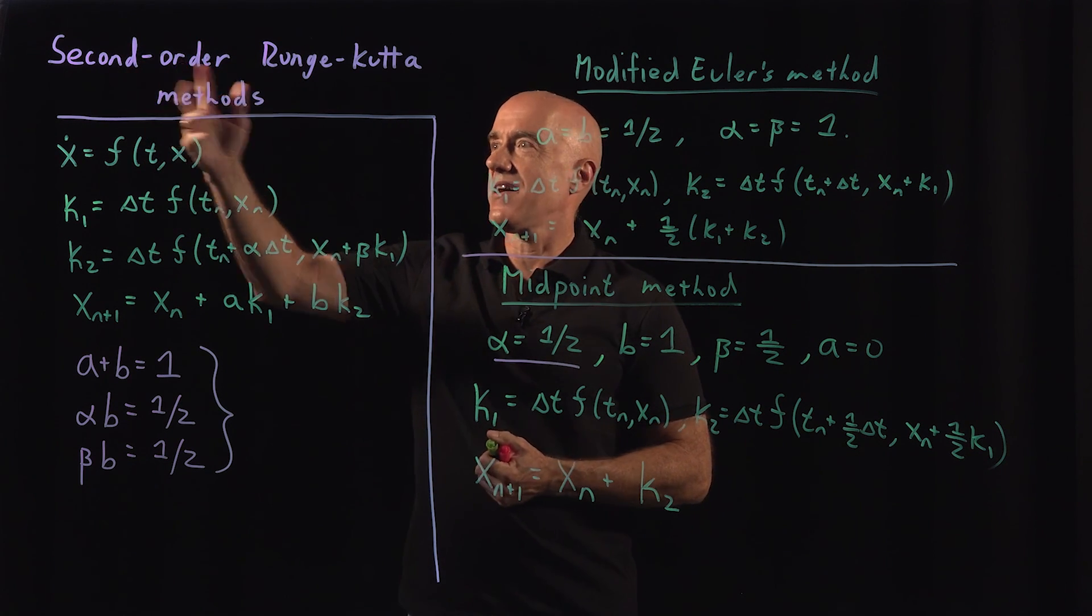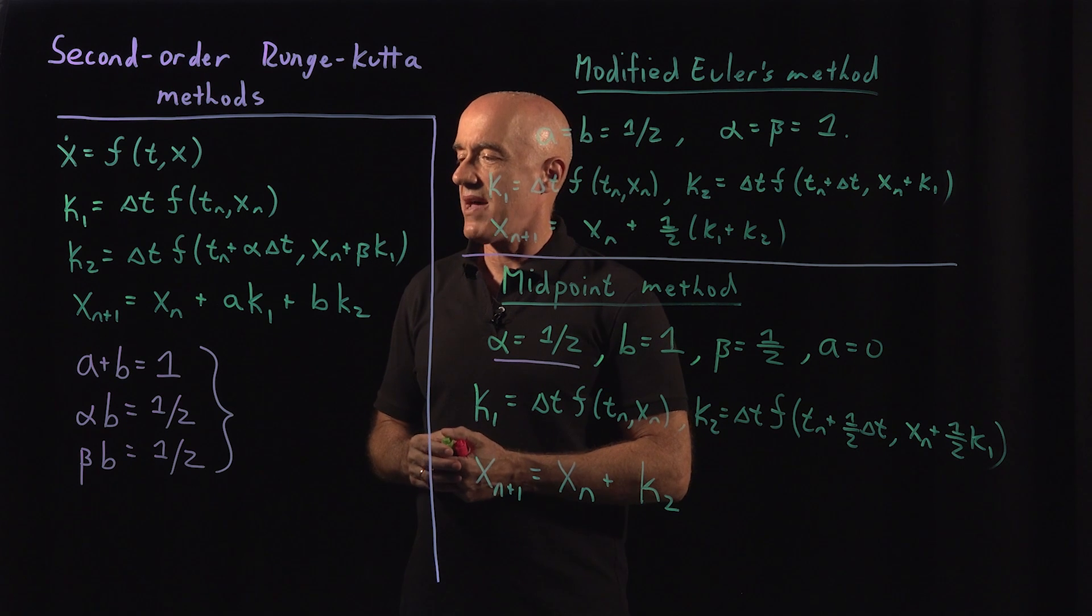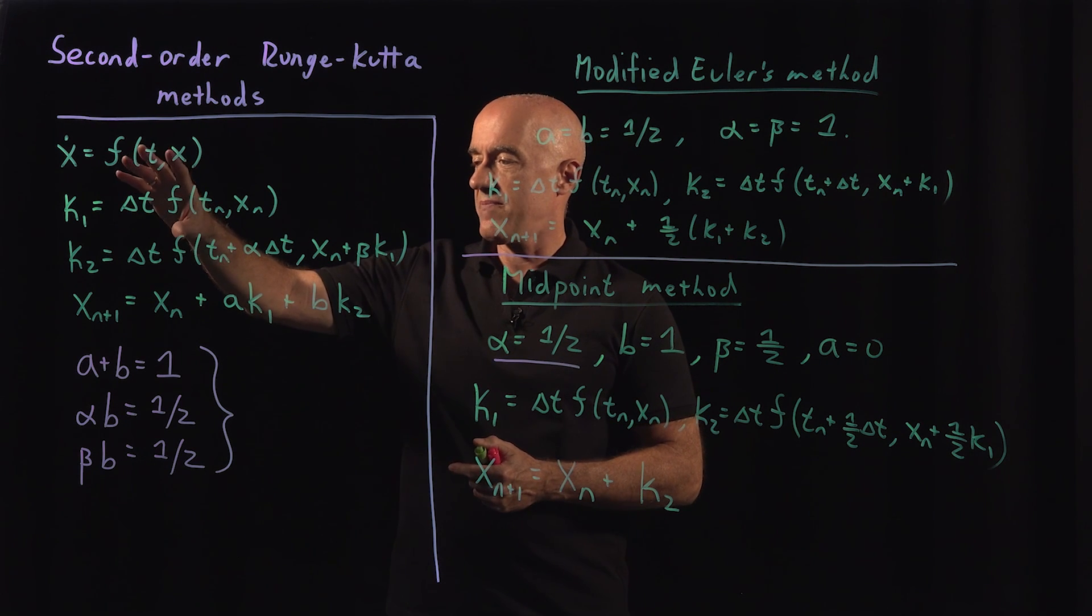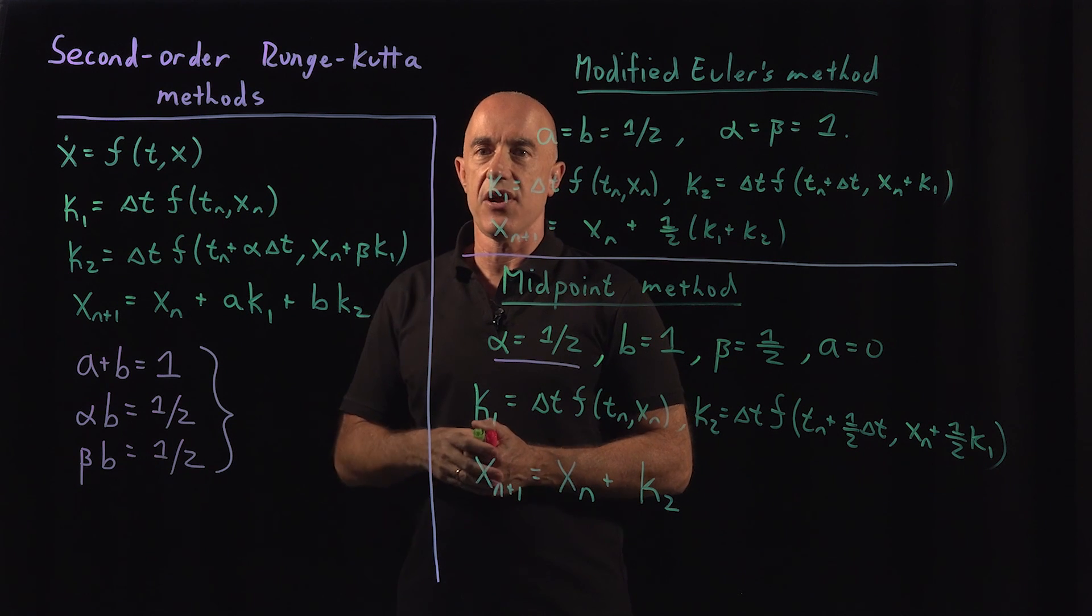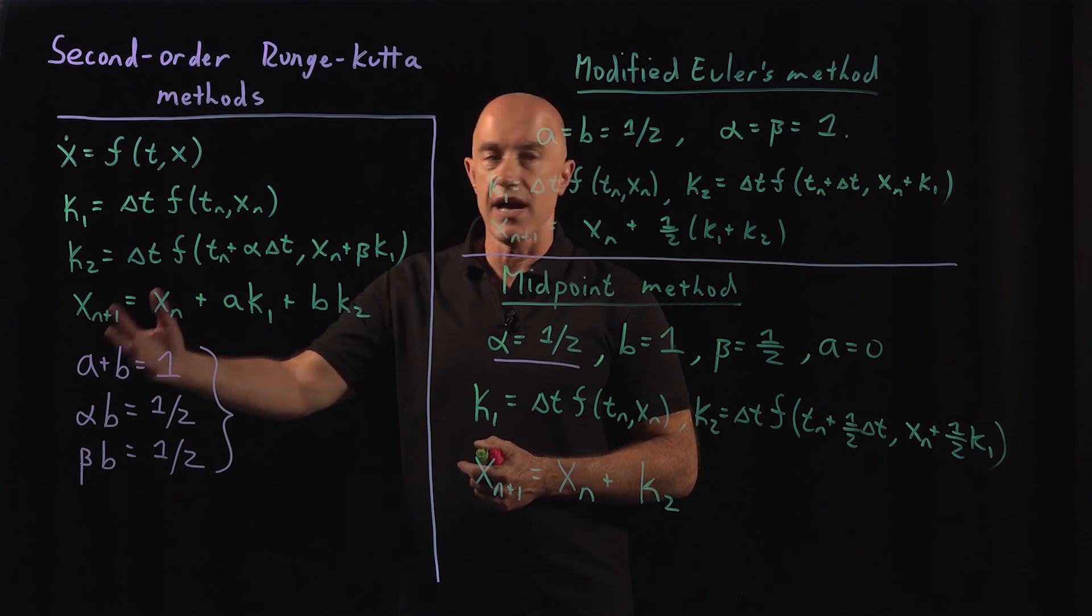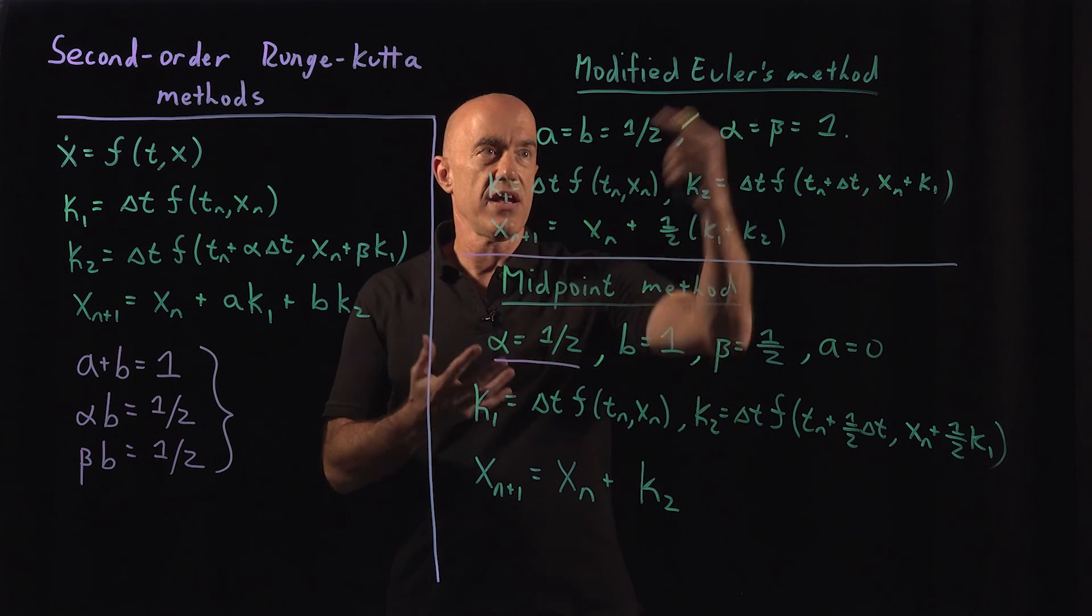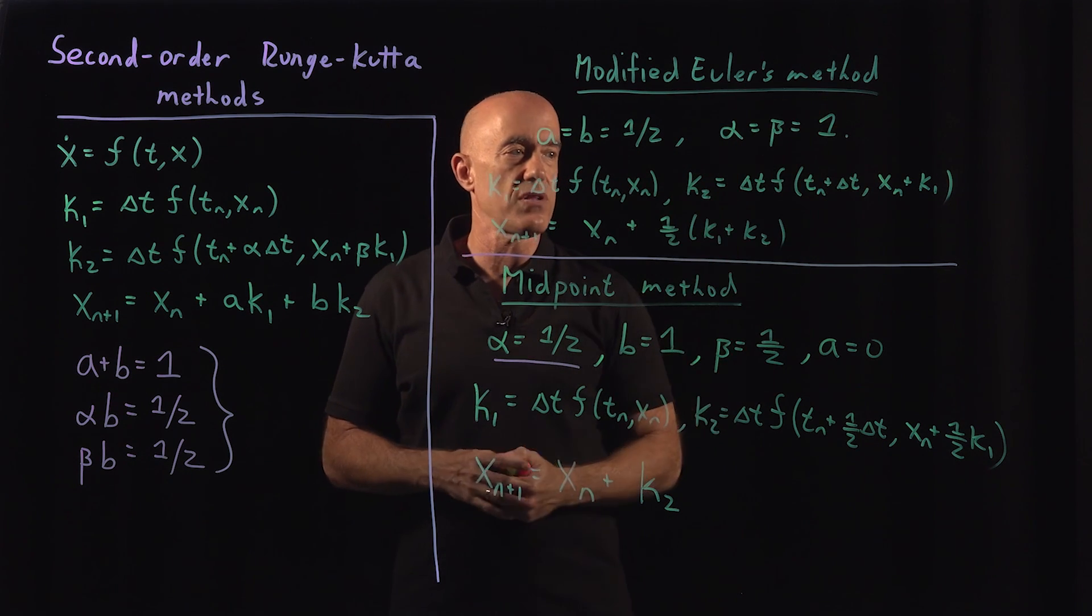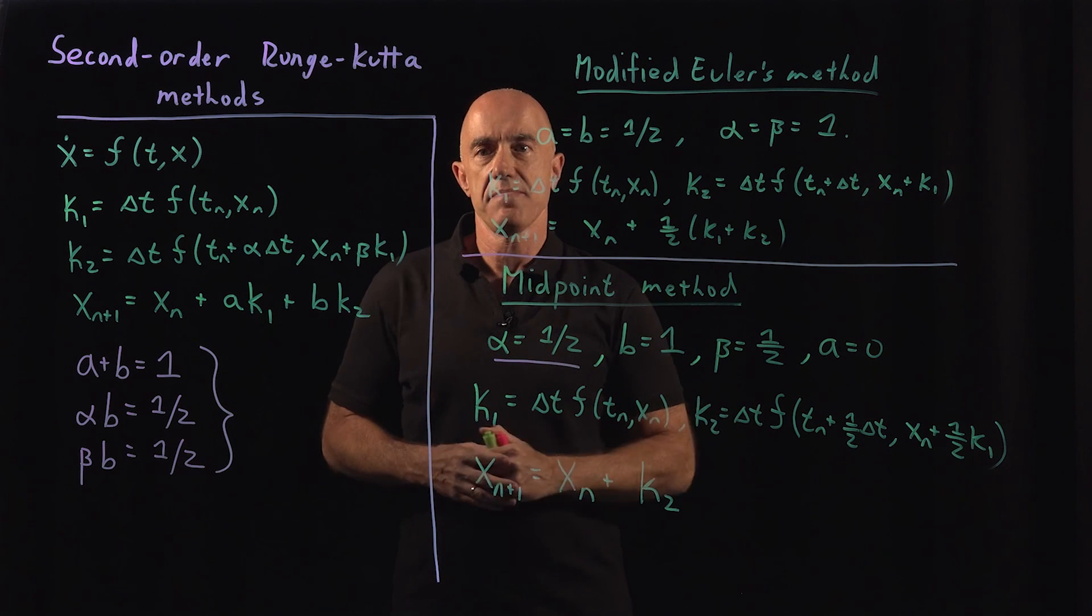There's a family of second order Runge-Kutta methods that are all basically equivalent in their accuracy, but they have to satisfy certain constraints. Here's two of them, the modified Euler's method and the midpoint method.